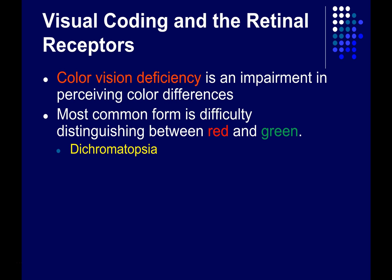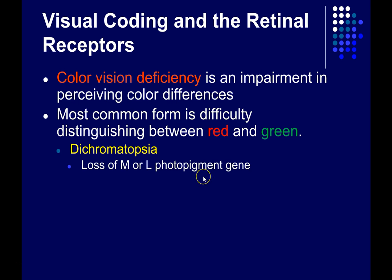But some individuals have a mutation in the gene that codes for one of the cone opsins, so that they only have two functioning cone opsins instead of three. They might just have short and medium wavelength cones, or short and long wavelength cones. It's usually a problem with the medium or long wavelength cones, so they have a loss of the M or L photopigment gene.